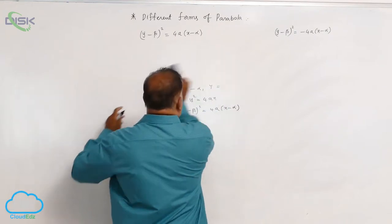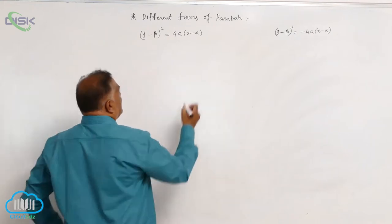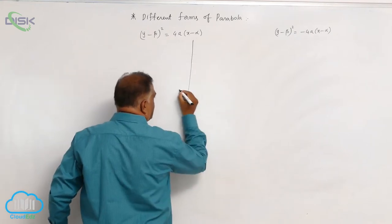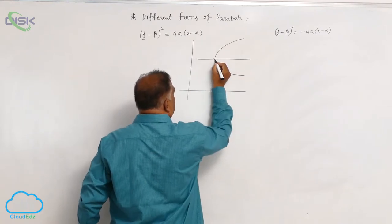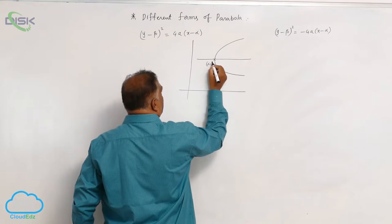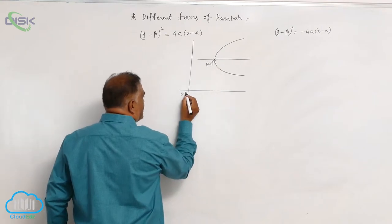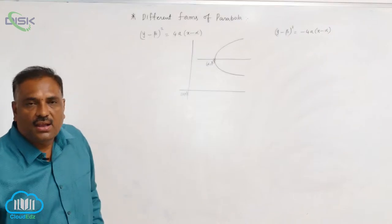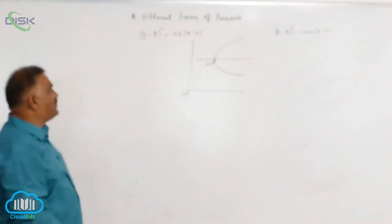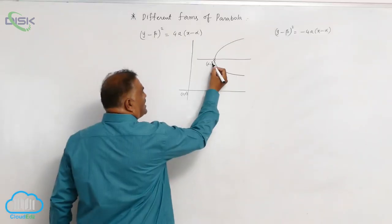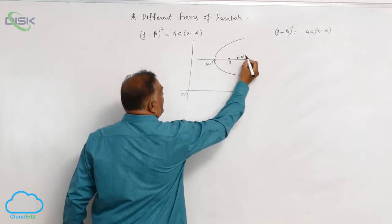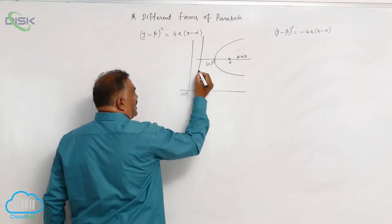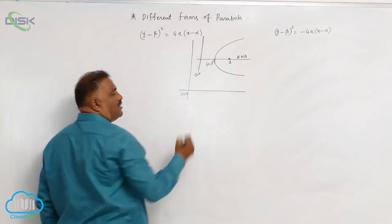Now, let us draw the diagram here. You can see this is the coordinate axis and this is going to be the parabola. This is vertex (α, β), whereas origin is (0, 0). Now, let us write all the properties one by one. You observe that vertex is (α, β). This is the focus. This is the axis. And somewhere here, the directrix will be.